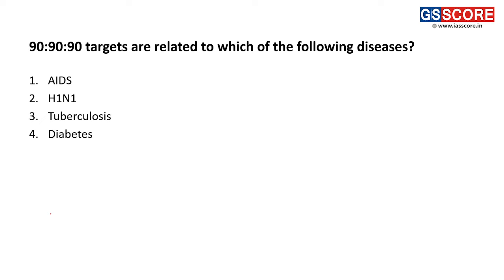Next question: 90-90-90 targets are related to which of the following disease? The 90-90-90 targets are related to AIDS. These targets focus on: diagnosis of 90% of people living with HIV; 90% of those diagnosed should receive antiretroviral therapy, ART; and 90% of people living with HIV on ART should be virally suppressed by 2020. This is an ambitious program for the treatment of the AIDS epidemic set by UNAIDS. The answer is A.